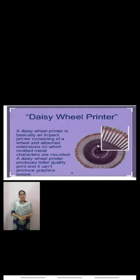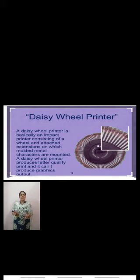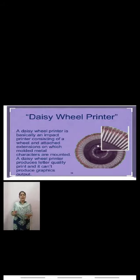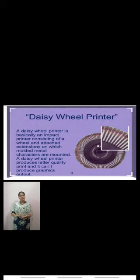Daisy wheel printer works on the same principle as a ball head typewriter. It is a disk made of plastic or metal on which characters stand out in relief along the outer edge. To print, the printer rotates the disk until the desired letter is facing the paper.